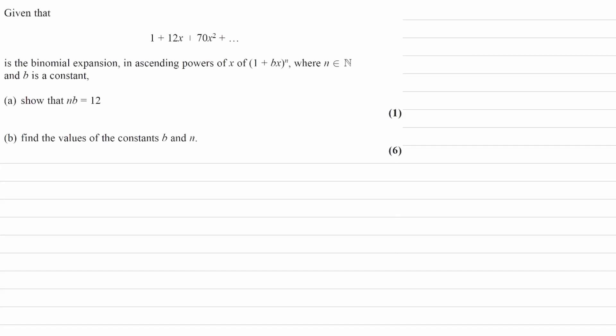Given that 1 plus 12x plus 70x squared is the binomial expansion in ascending powers of x of 1 plus bx to the power of n, where n is a natural number — meaning a positive integer — and b is a constant, show that nb is equal to 12.